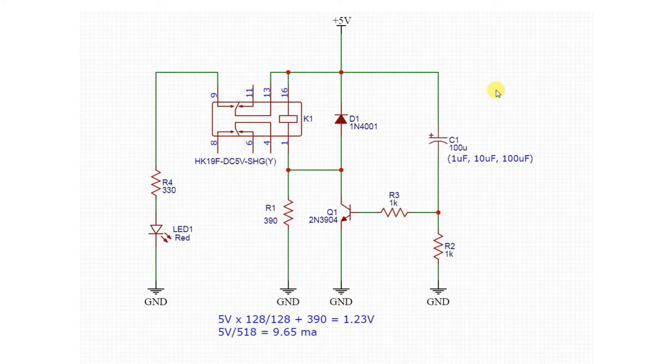Now the combination of C1 and R2 here will have a time constant of approximately 0.1 seconds with a 100 microfarad capacitor. So after 0.1 seconds, the capacitor will be mostly discharged through R2. The voltage here will drop. Current flow into Q1's base will drop. Q1 will turn off.